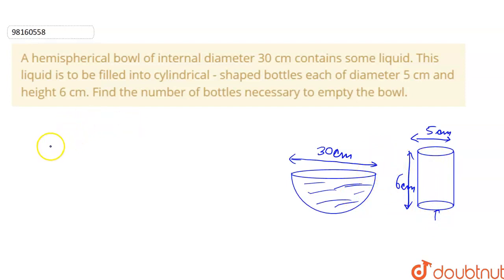So basically, what number of bottles is N? Volume of Hemisphere upon Volume of Cylinder. Okay, number of cylinders is like this.